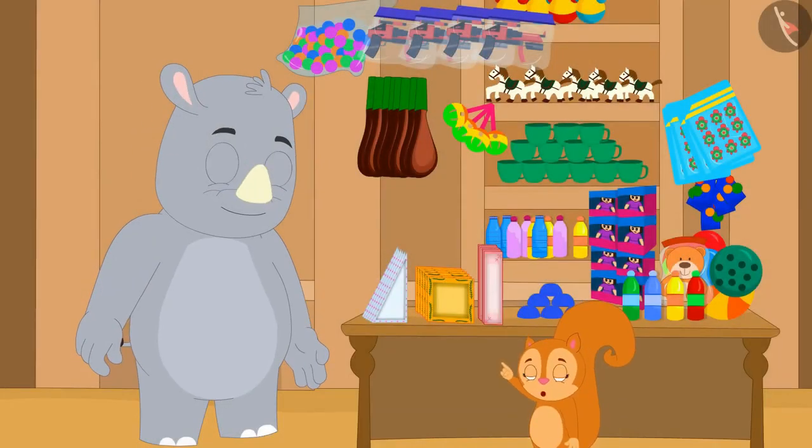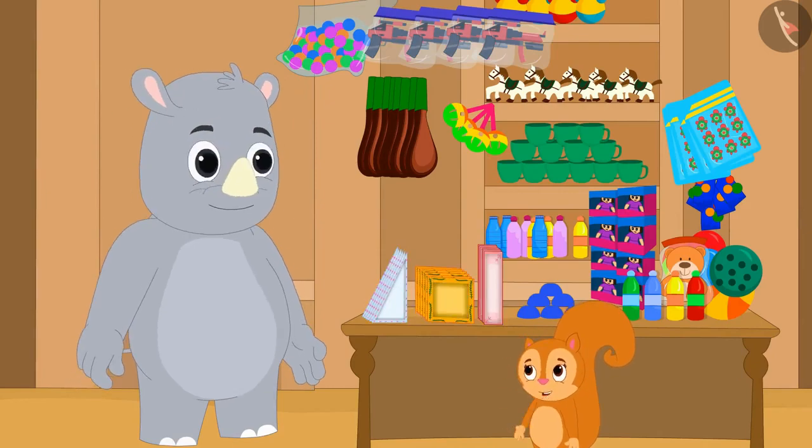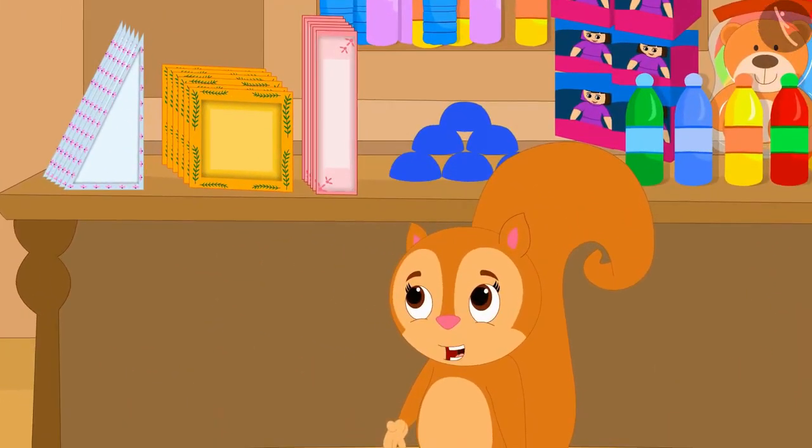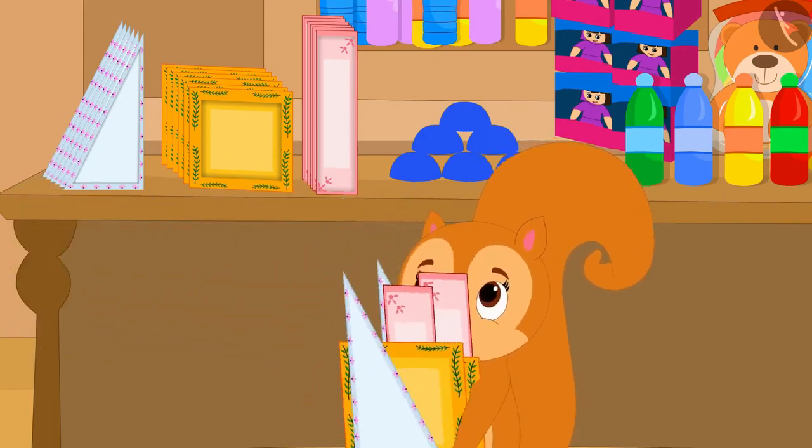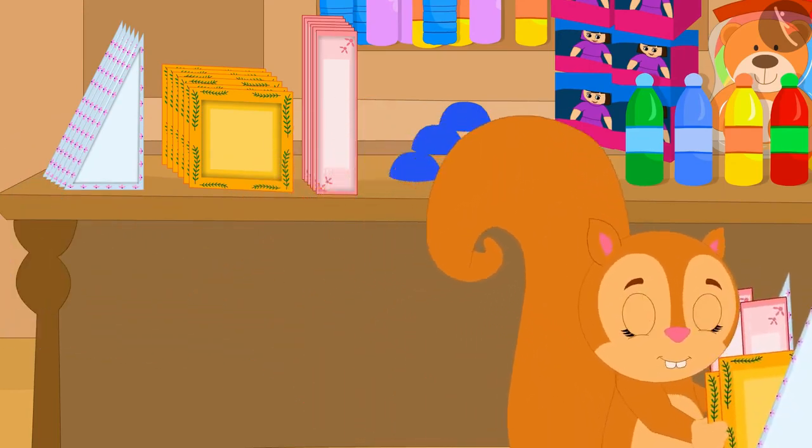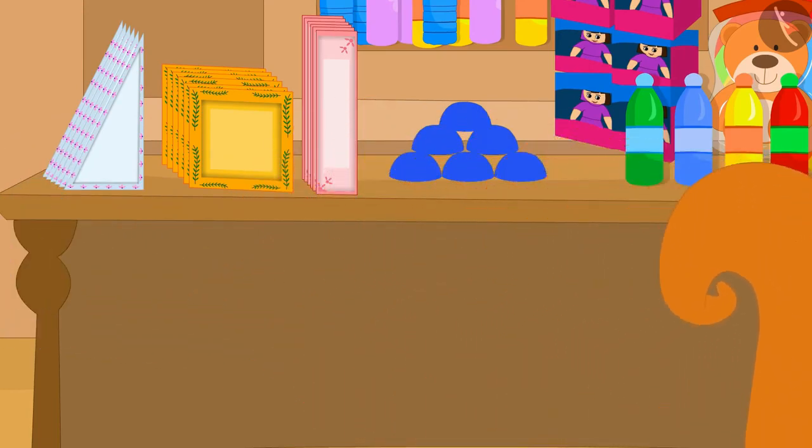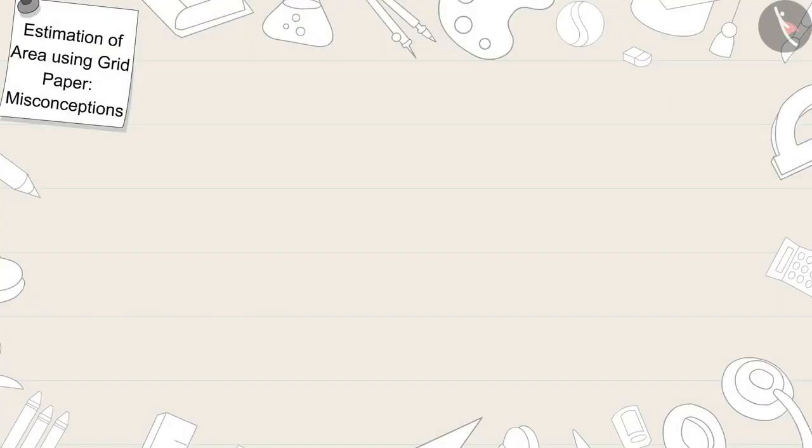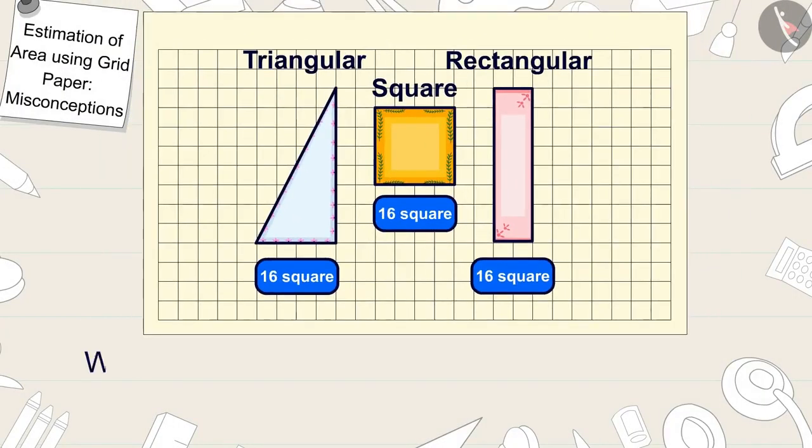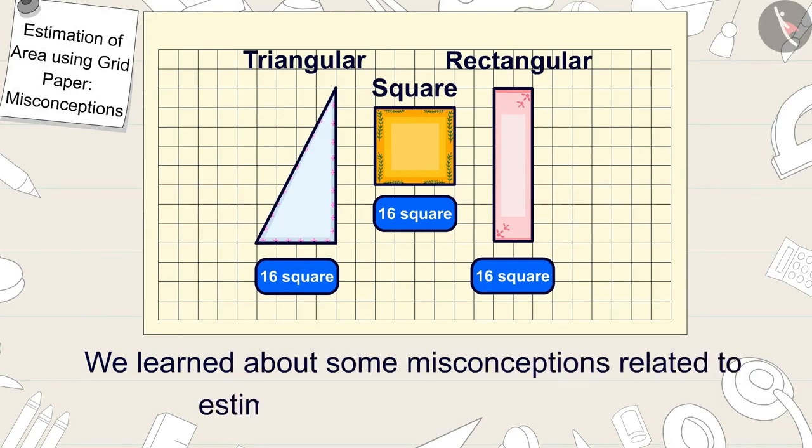The plates of these three shapes are very beautiful. Give me plates of all these three shapes, said Chanda, and then bought plates of all three shapes from Gaggoo. Children, in this video we learned about some misconceptions related to estimating area using grid paper.